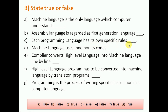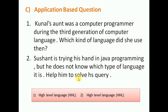Each programming language has its own specific rules — true. Machine language uses mnemonics — false, because machine language uses zeros and ones; it is assembly language that uses mnemonic codes. Compiler converts high level language into machine language line by line — false, because compiler compiles the whole program at once; it is the interpreter that converts line by line. High level language must be converted into machine language by translator programs — true. Programming is the process of writing specific instructions in a computer language — true.